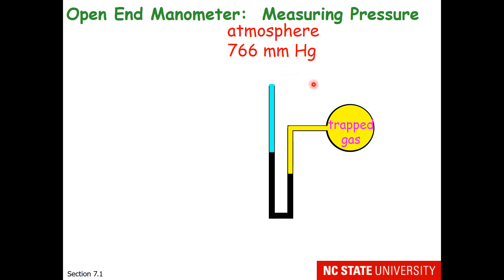But if there is a difference in pressure, then the height of the mercury is going to tell us what that pressure is. Suppose the height difference is 18 mm. So we have the atmosphere pushing down, and we also have the trapped gas pushing down.